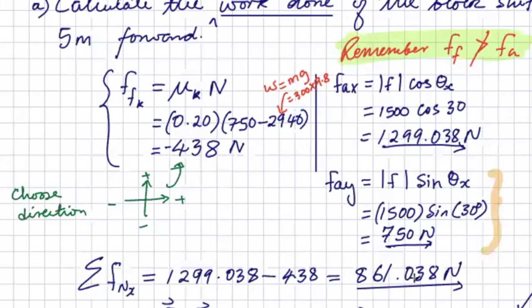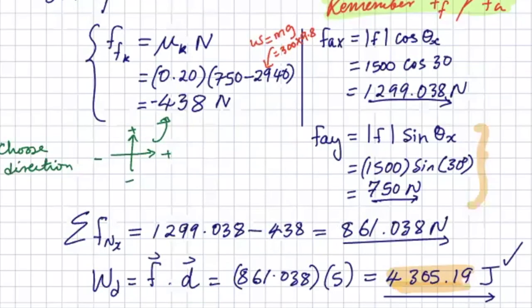And then we get the net force, not the normal force, but the net force to be 861.038. We multiply it with the displacement, and we can get the total work done, or basically the work done by the net force in the forward direction.